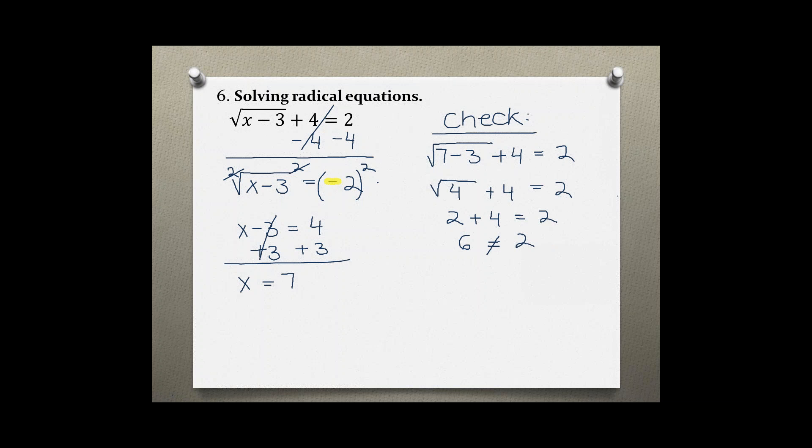So at this step, we realize there's no solution for this problem. If you don't initially realize that an even index with a negative result won't work out, you have to keep going and check by plugging your final answer back into the original equation. In this case, you have no solution as your final answer.